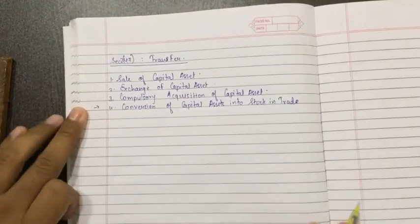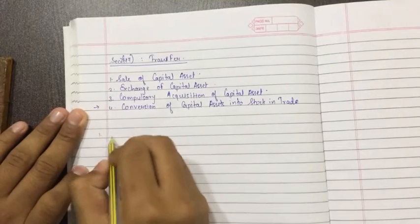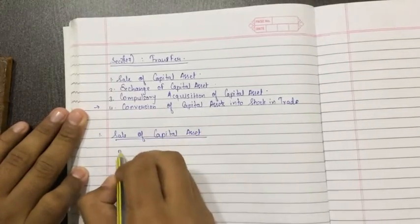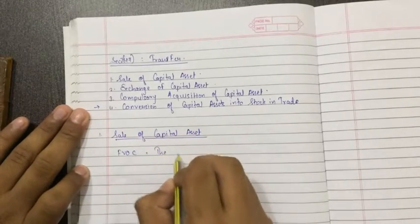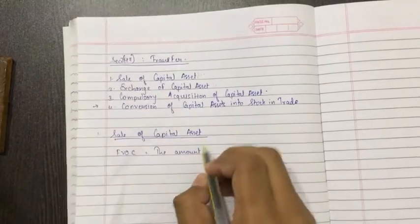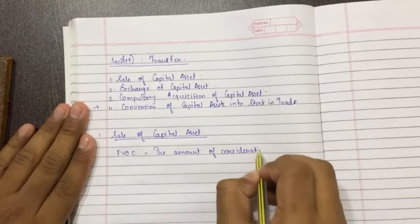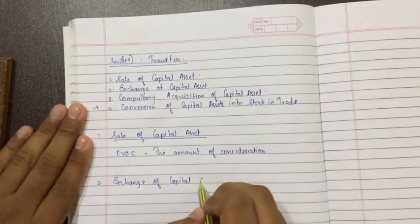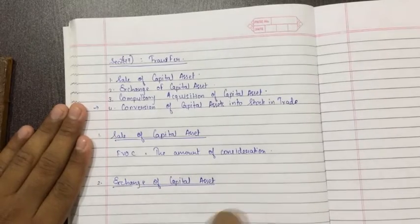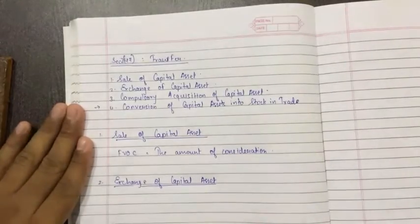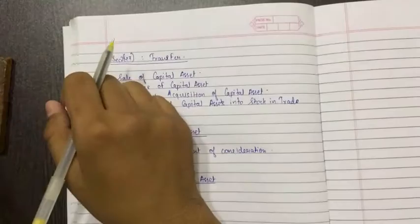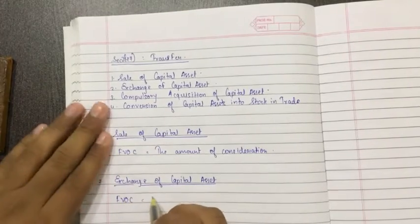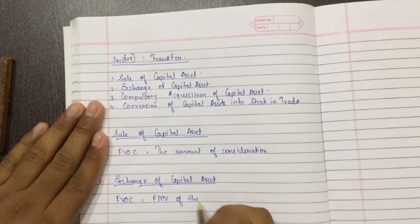Let's start. Please write this much first. Sale of capital asset: normal FVC, full value of consideration, is equal to the amount of consideration. I don't need to teach all. Second, exchange of capital asset. This is something new. What is exchange of capital asset? You have given some asset and you are taking back some asset, like you have given a gold ring to the jeweler and jeweler is giving you earrings. So how to calculate capital gain on it? FVC equals fair market value, FMV of the capital asset.